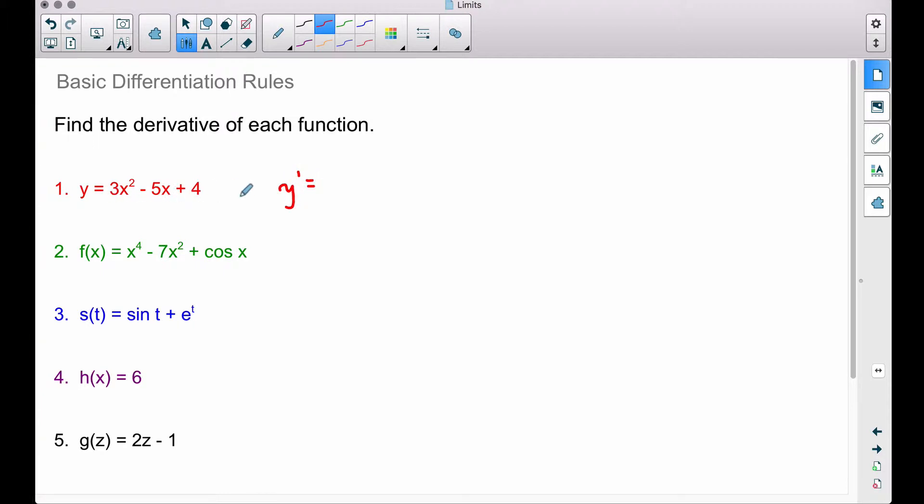If you have a polynomial, no matter how many terms you have, start with this first term here. Its exponent is a 2. Pull it down and multiply it by the coefficient that's already out here. 2 times 3 is 6x, subtract 1 from that exponent that you just pulled down. Since we had an exponent of 2, our exponent becomes 1.